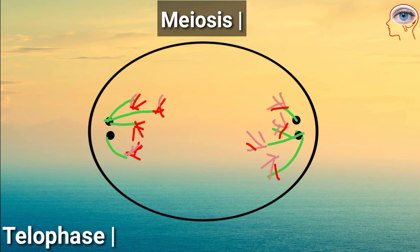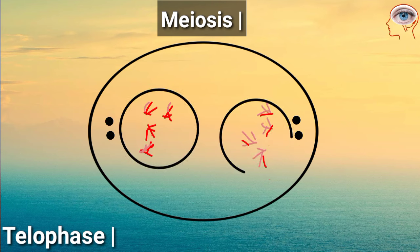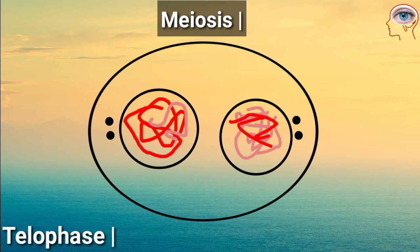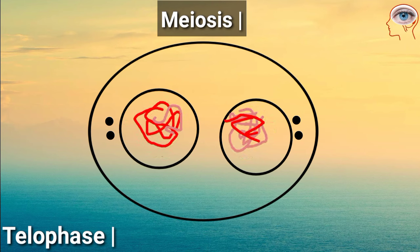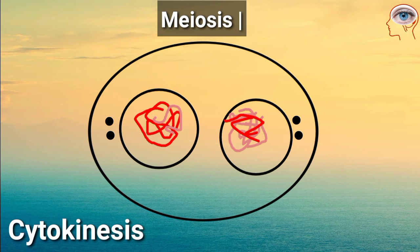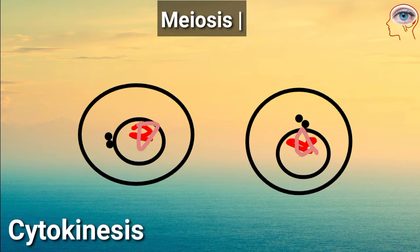In telophase 1, chromosomes arrive at the poles, and each cell has half the number of chromosomes. Spindle fibers disappear and the nuclear envelope forms again around each set. Chromosomes uncoil. In cytokinesis, the cell membrane pinches and creates two haploid daughter cells.